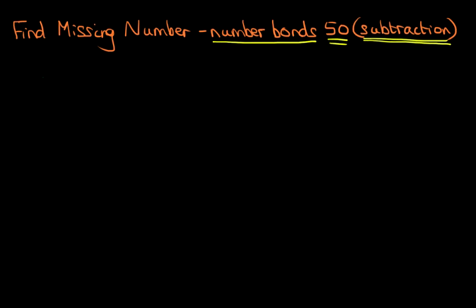Let's have a look at our first example. We've got 50 minus something equals 23. Now previously, in the last tutorial, what we did was we swapped the box — the missing number — with the number on the right hand side, and then we subtracted 23 from 50.